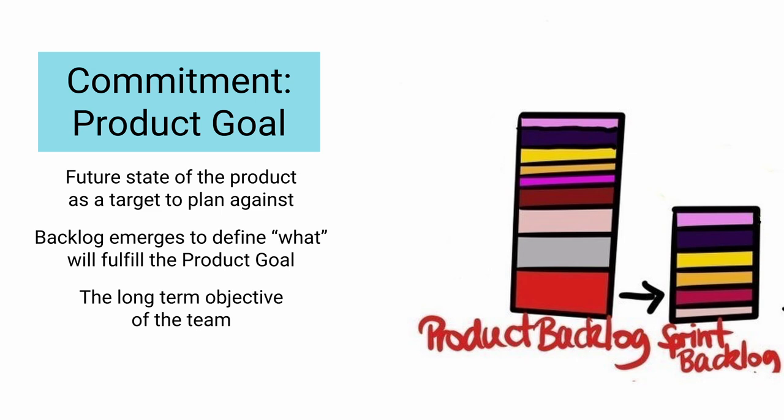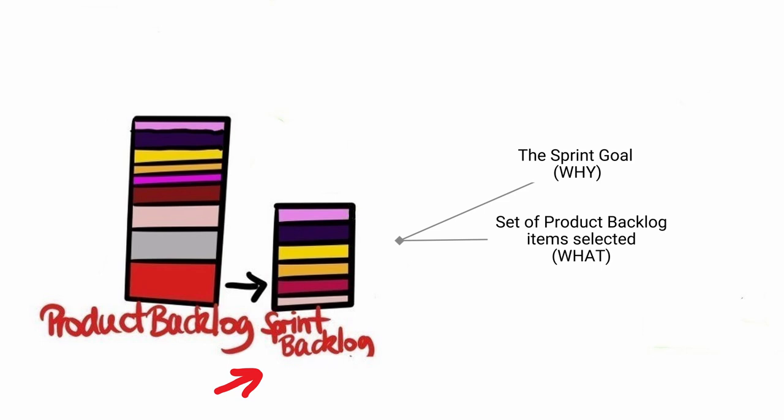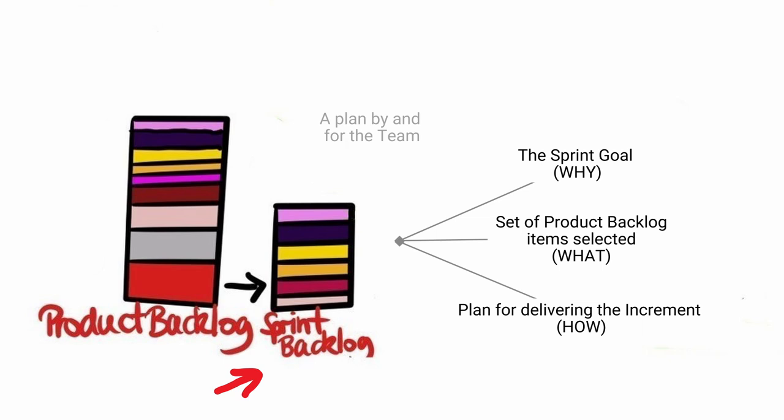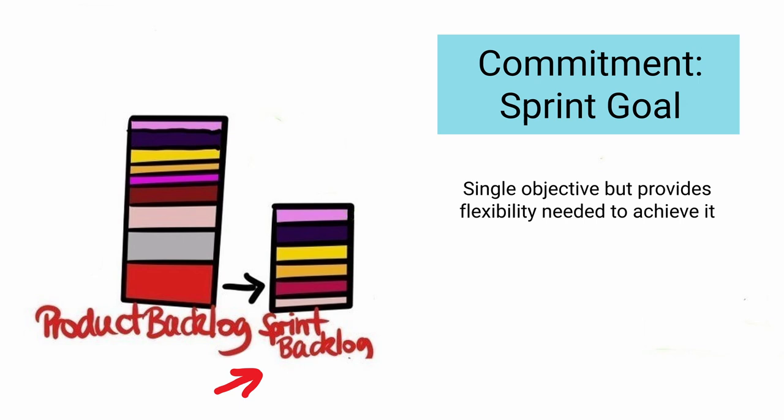Sprint backlog. The sprint backlog is composed of the sprint goal (why), the set of product backlog items selected for the sprint (what), as well as an actionable plan for delivering the increment (how). The sprint backlog is a plan by and for the team. Commitment: Sprint goal. The sprint goal is a single objective for the sprint but provides flexibility in terms of the exact work needed to achieve it. The sprint goal also creates coherence and focus, encouraging the Scrum team to work together rather than in separate initiatives.